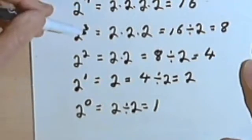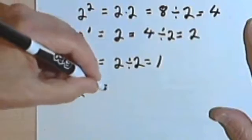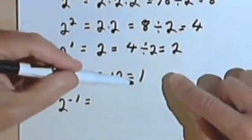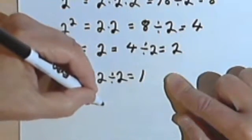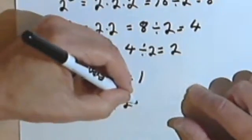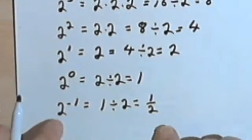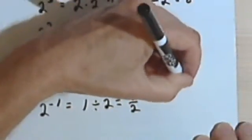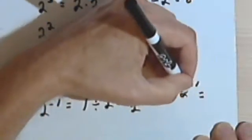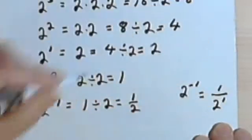So we've had 2 to the 4th, 2 to the 3rd, 2 squared, 2 to the 1st, 2 to the 0. Following this pattern, it's time for 2 to the negative 1. And following the pattern of taking the previous number and dividing it by 2, I'm going to take this 1 and divide it by 2. Well, 1 divided by 2 is 1 half. And remember we had a rule: if we have 2 to a negative power, like 2 to the negative 1st, we're going to put the 2 in the denominator and change the power to a positive, which is what we have here.